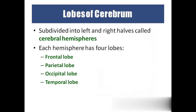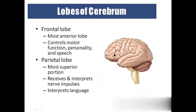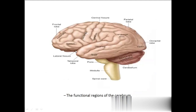Coming to the lobes of the cerebrum: we subdivide the right and left halves of the cerebral hemisphere into four lobes — frontal lobe, parietal lobe, occipital lobe, and temporal lobe. The frontal lobe is for personality, speech, and movement. The parietal lobe is for sensation and language area. The occipital lobe is for vision. And the temporal lobe is for hearing and smell.